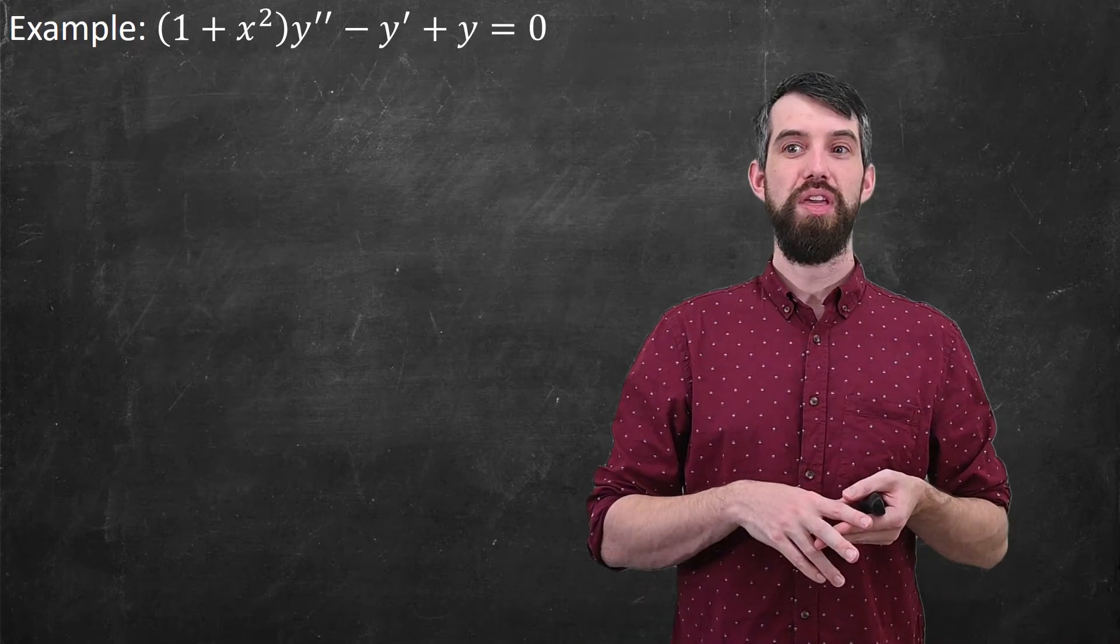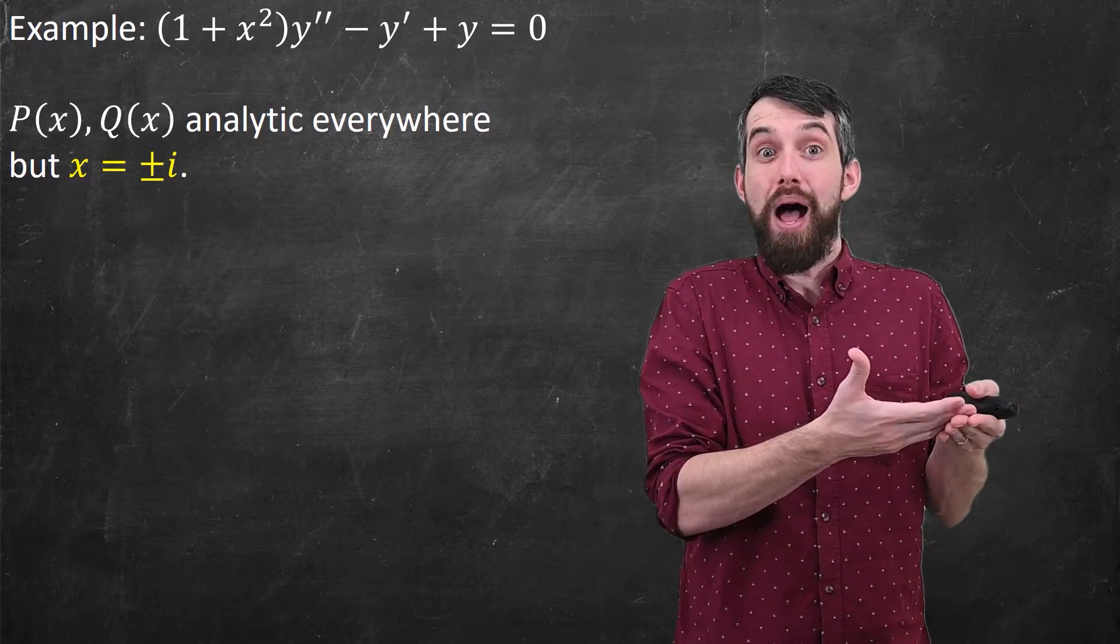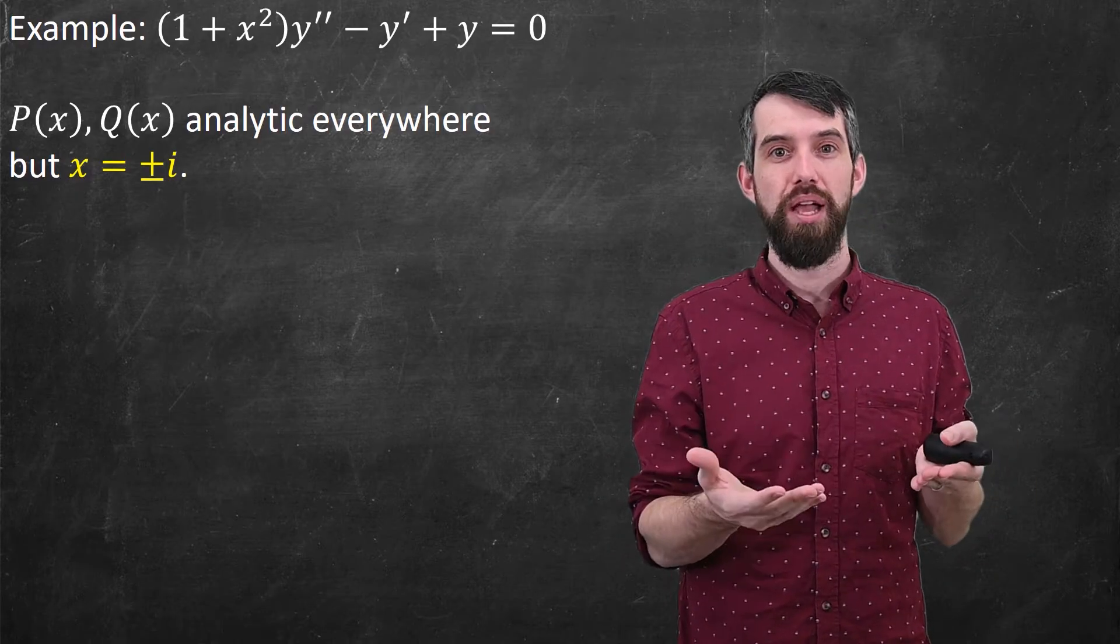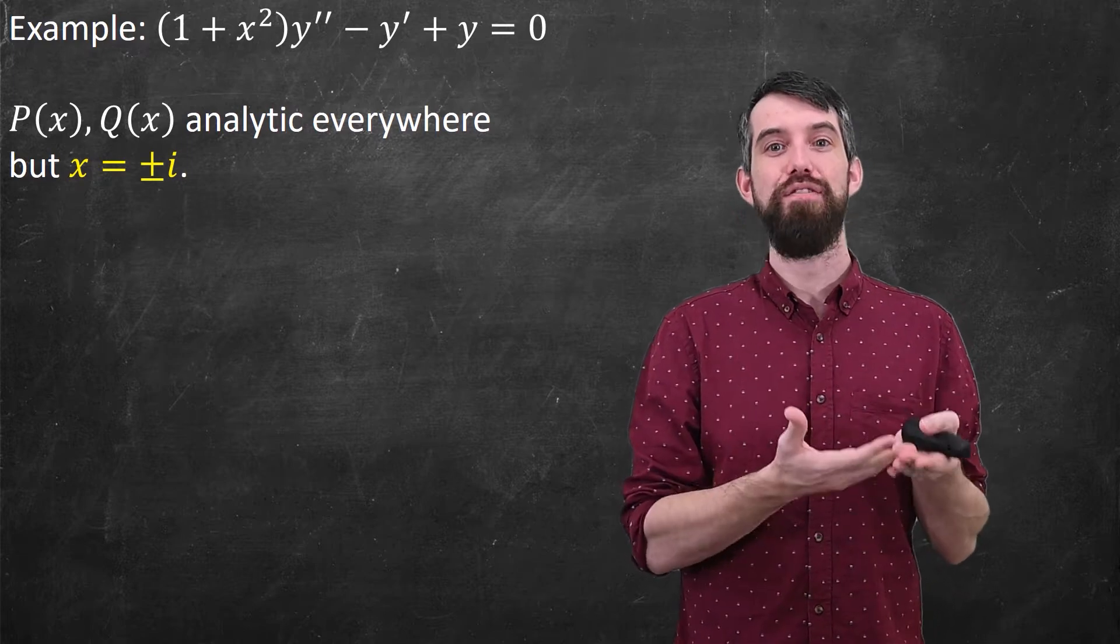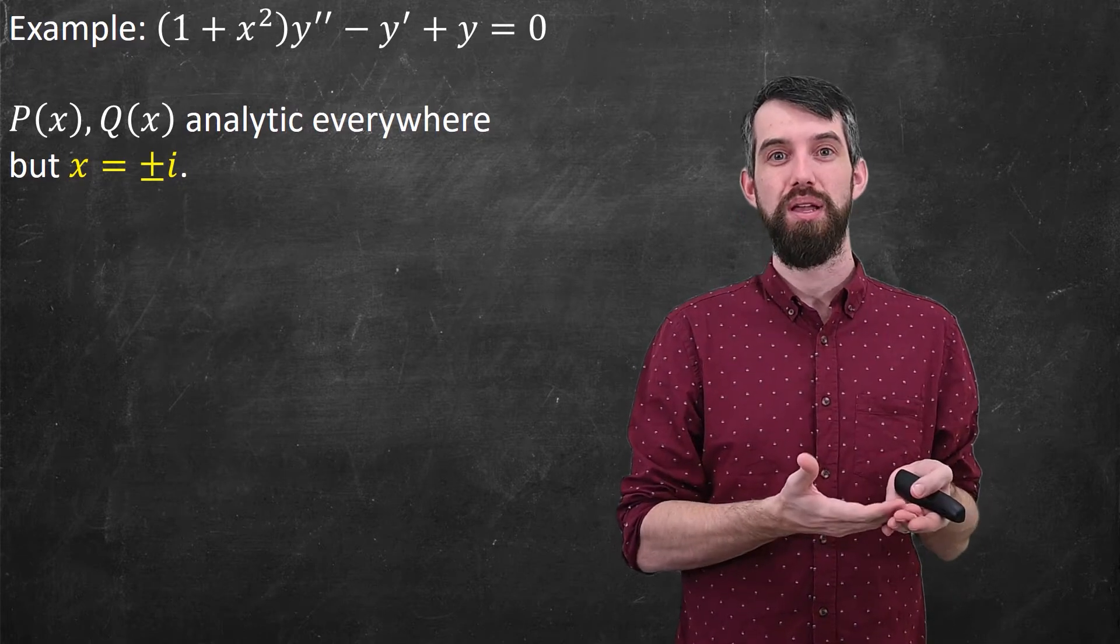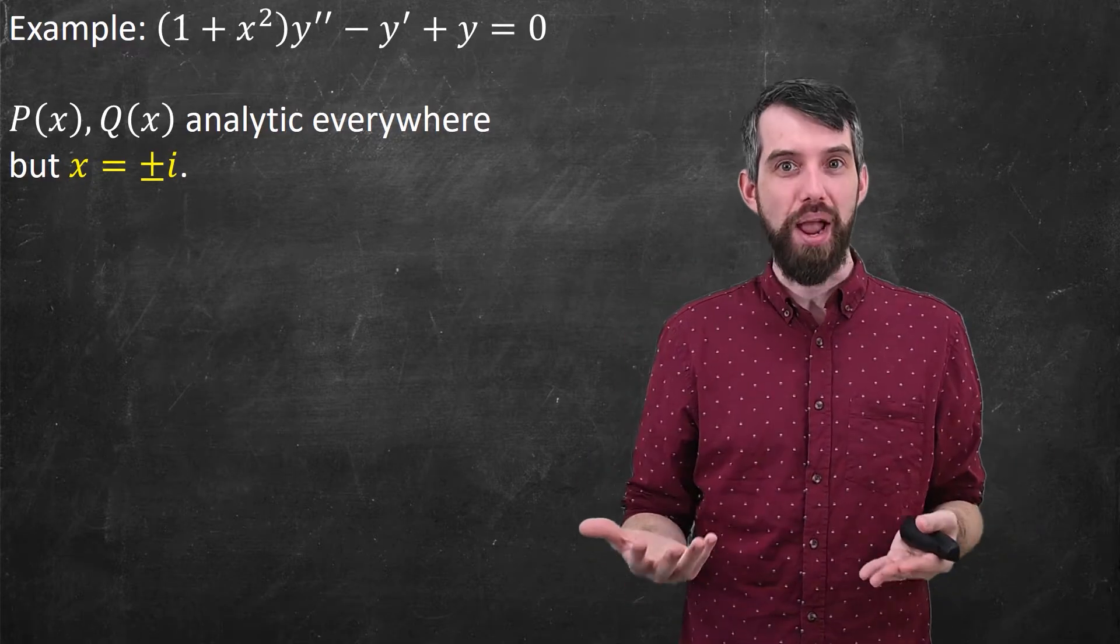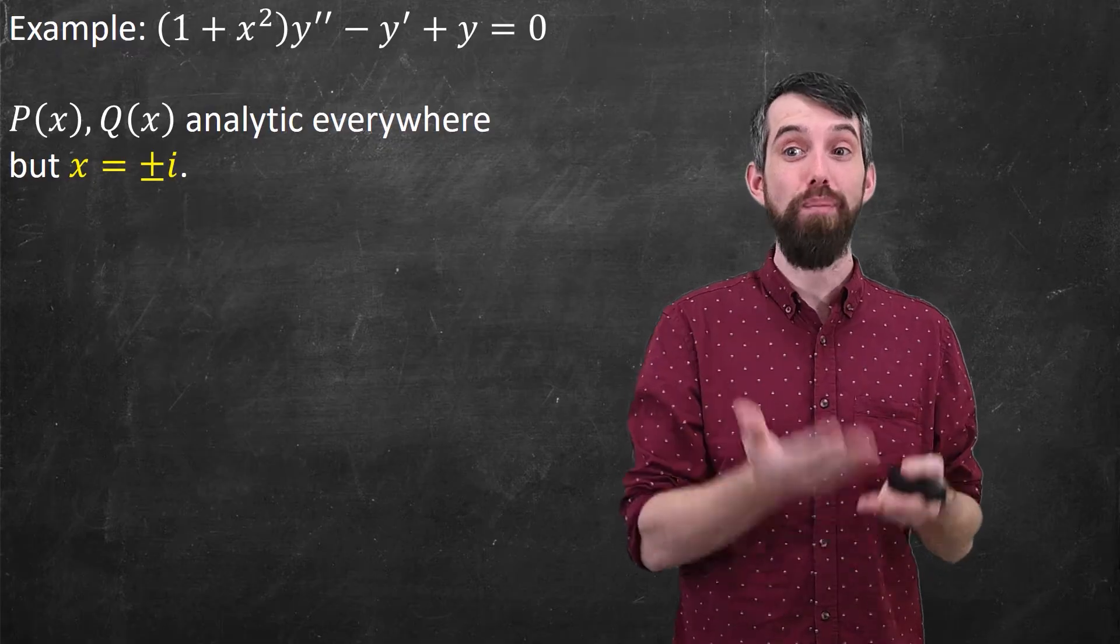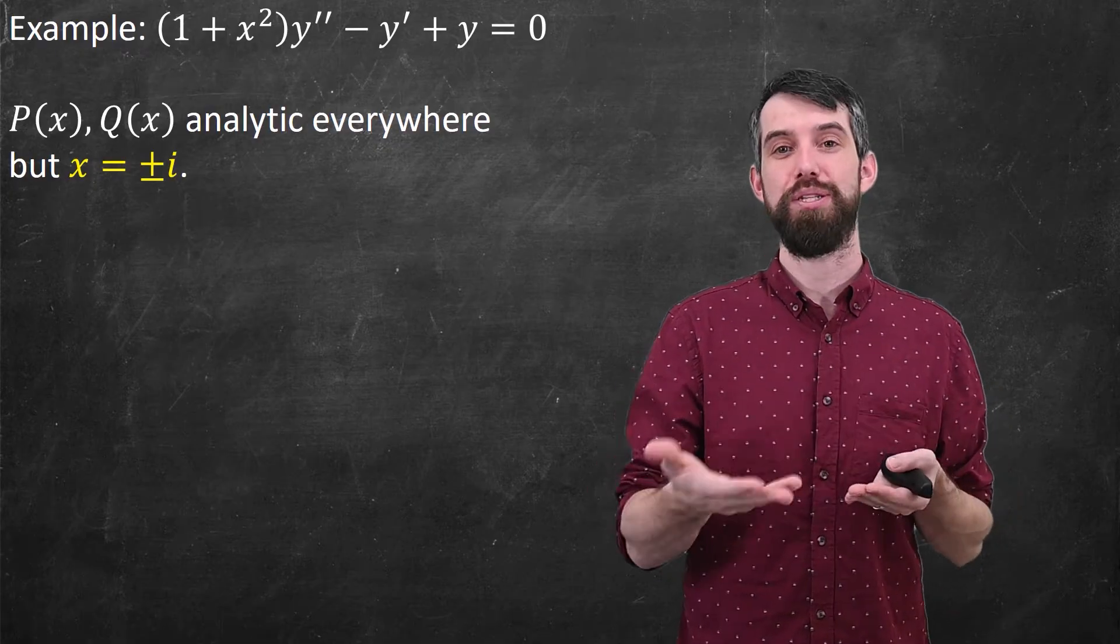I'm going to have the equation (1 + x²)y'' - y' + y = 0. So in this case, the only problem spot if I try to divide through by the a, the 1 plus x squared, the only problem spot is where that a P of x, the coefficient of y double prime could be 0. And so the P of x and the Q of x, they're analytic everywhere except for plus or minus i, because 1 plus x squared is only 0 when x is equal to plus or minus i.